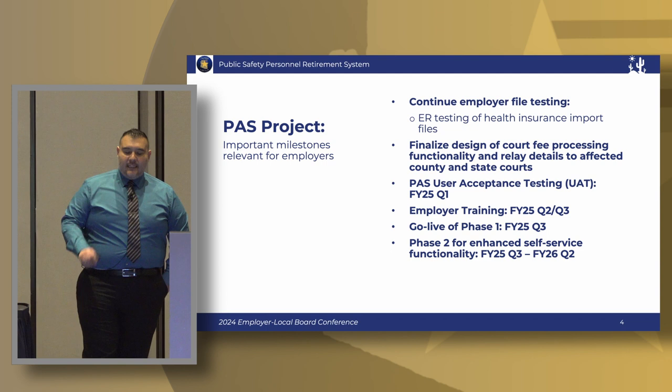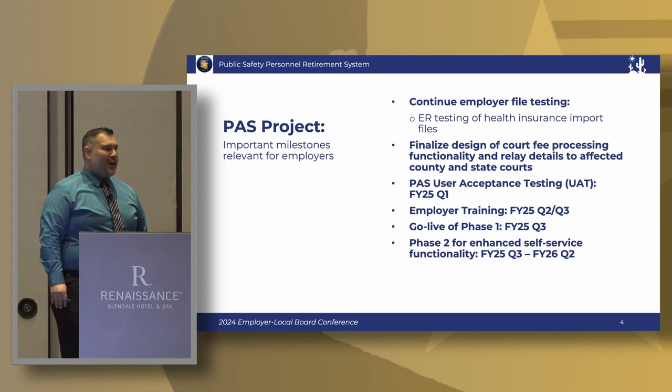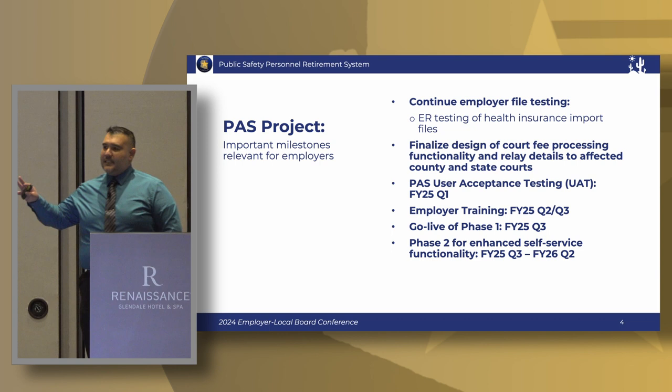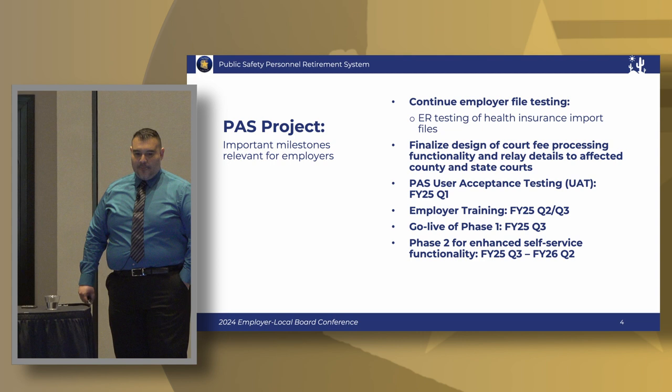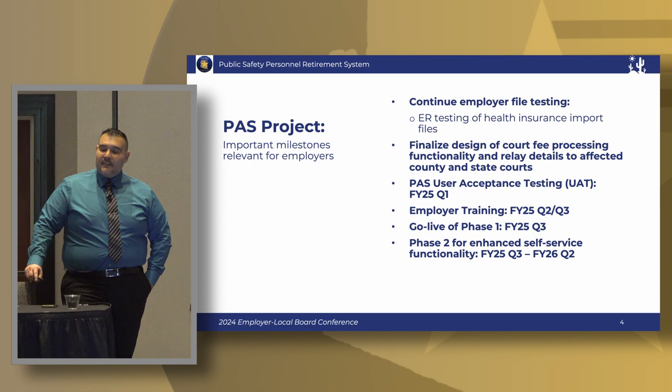What remains in terms of testing: we plan to go through our UAT testing beginning in the first quarter of fiscal 25, just a few months around the corner. We're beginning preparation of all the full cycle business processes that we'll be testing within the system. We anticipate beginning our training for employers in the second and third quarter of fiscal 25.